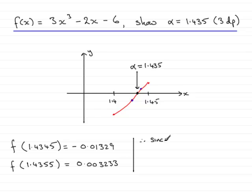since there's a change in sign, alpha, the root, must equal 1.435 to 3 decimal places. And that brings us to the end of this question.